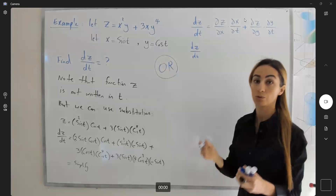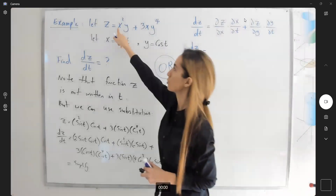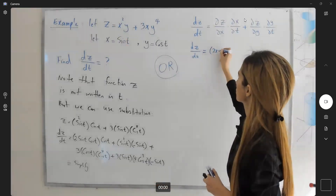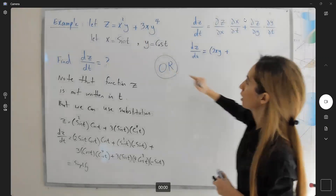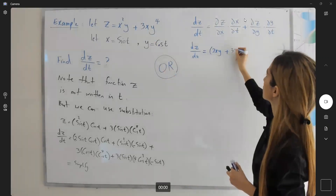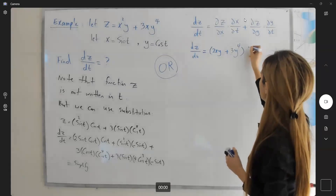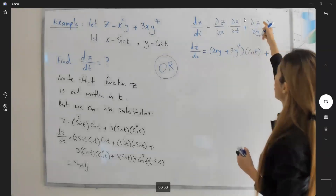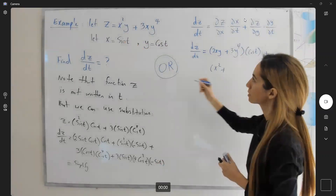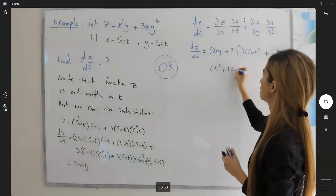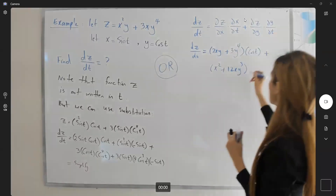We're applying two different methods. dz/dt equals the partial derivative of z with respect to x — which is 2xy plus 3y to the fourth — times the partial derivative of x with respect to t, which is cosine t, plus the partial derivative of z with respect to y — which is x squared plus 12xy cubed — multiplied by the partial derivative of y with respect to t, which is negative sine t.